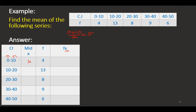So the first mid x is obviously 5. Then 10 plus 20 is 30, divided by 2 gives 15. Then 20 plus 30 is 50, divided by 2 gives 25. Then 30 plus 40 is 70, divided by 2 gives 35. Then 40 plus 50 is 90, divided by 2 gives 45.